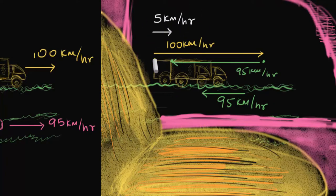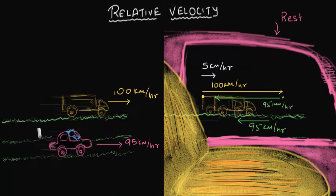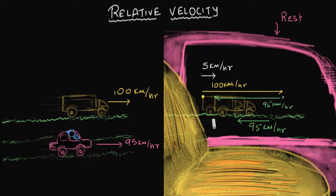Therefore, as seen from the car, the truck only goes forward 5 kilometers every hour. The velocity of the truck as seen from the car is 5 kilometers per hour forward. When we look from the ground, the truck is going 100 kilometers per hour. But from the car, it's only 5 kilometers per hour. The velocity you measure really depends on where you measure it from — that's the whole idea behind relative velocity.